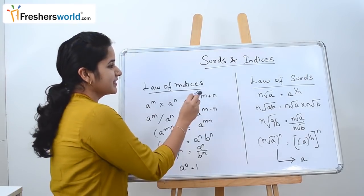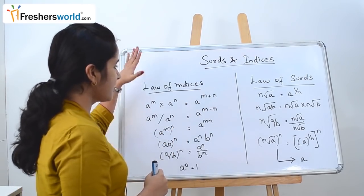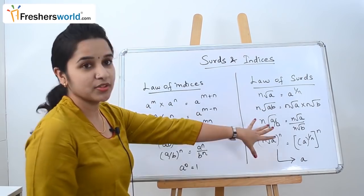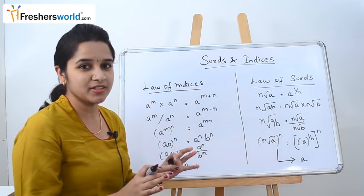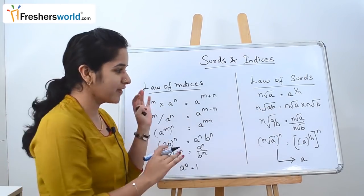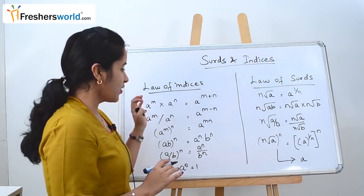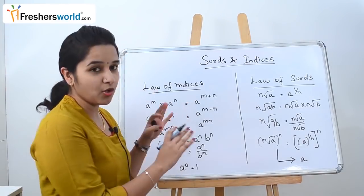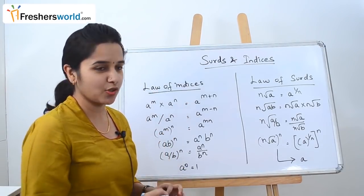Laws of Indices and Laws of Surds. Let's cover the Laws of Indices first, then we go to the Surds. These are just basic concepts you should know. You don't have to memorize all these formulas. Once you understand what this concept is about, it will be very easy for you to solve the sums.